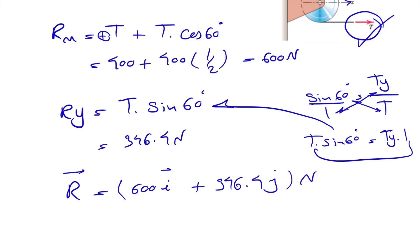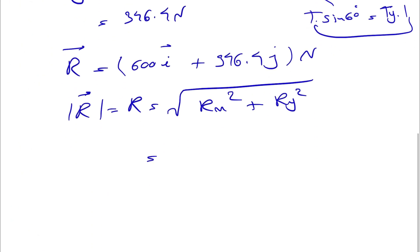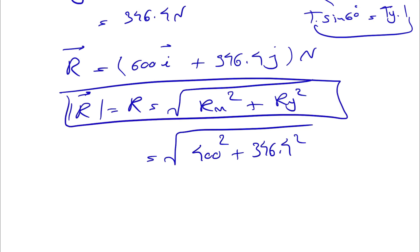And in the second part, we just need to find the magnitude, which we can show it either like this, or just R alone, and we have the square root of Rx squared plus Ry squared, and this would be basically the square root of 400 squared plus 346.4 squared, and we need to keep this formula in our mind. We'll have the same thing in three-dimensional questions, and in 3D questions